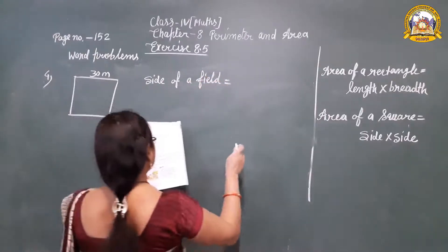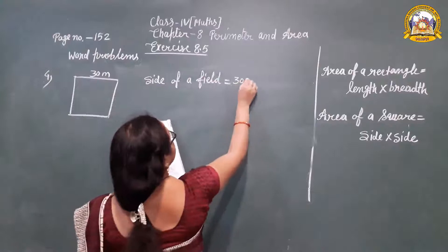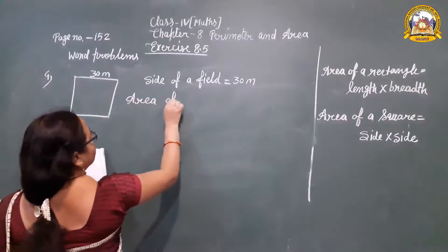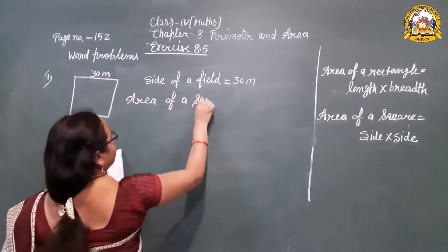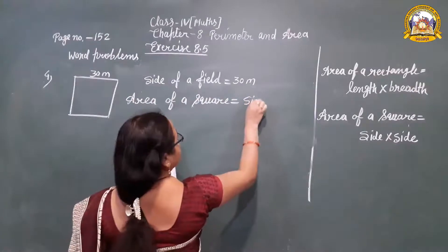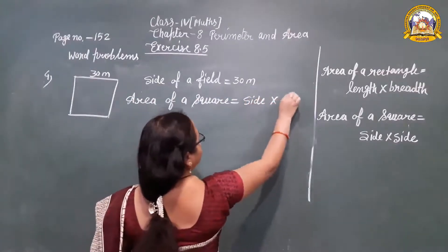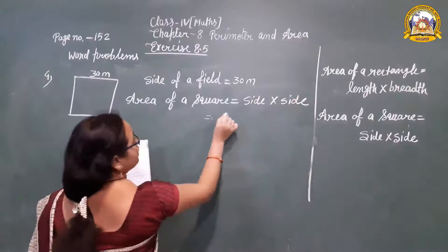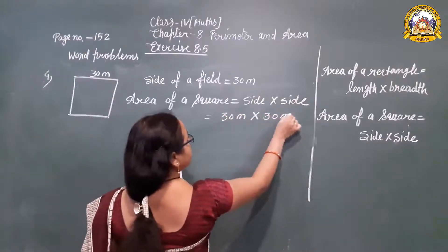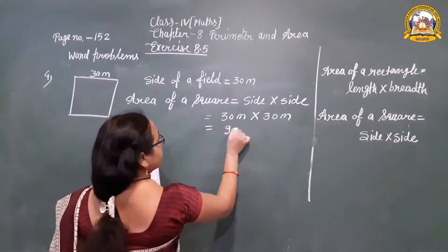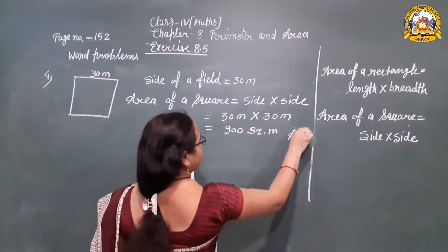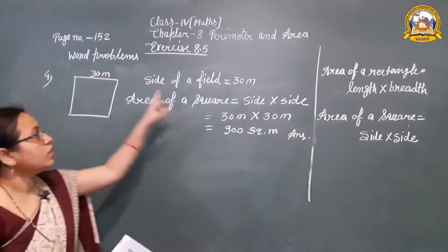The side of the field is 30 meters. Area of a square is equal to side into side: 30 meters into 30 meters equals 900 square meters. That is the answer — 900 sq meter is the area of the field.